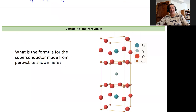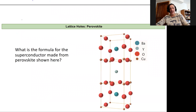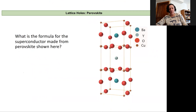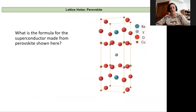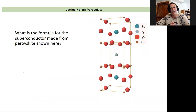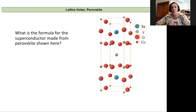In our next video, we're going to walk through the solution to the chemical formula for a perovskite structure that has barium, yttrium, oxygen, and copper. But I think you should try this first on your own and then watch the following video.